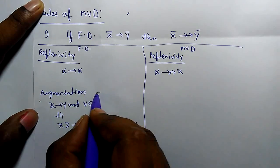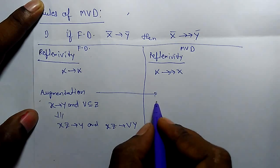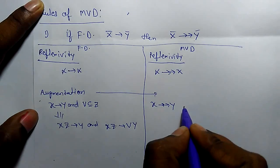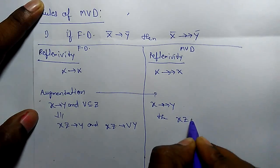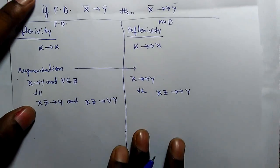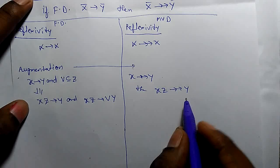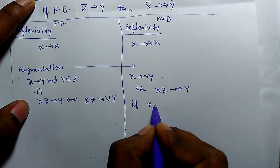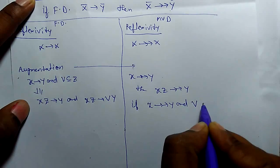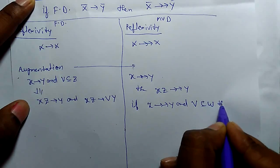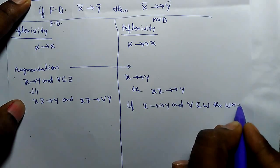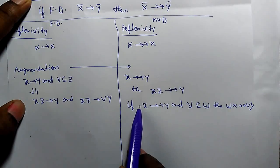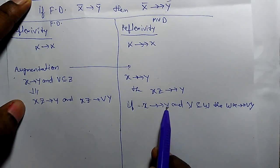Similarly, in the augmentation rule for multivalue dependency, if X multivalue determines Y, then X of Z multivalue determines Y. Furthermore, if X multivalue determines Y and V is a subset of W, then WX multivalue determines V of Y. So if V is a subset of W, we can augment W and V in the attributes.